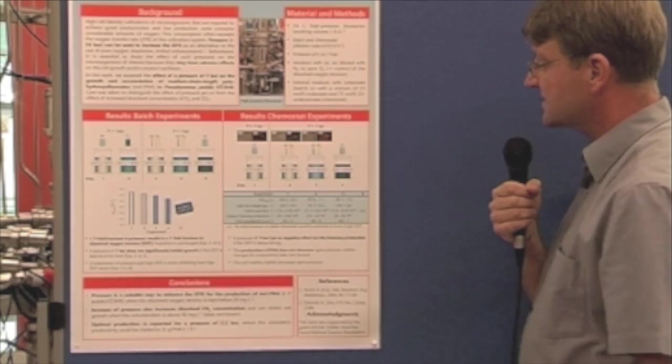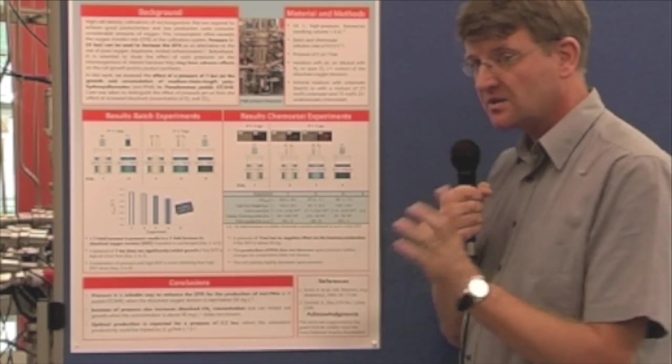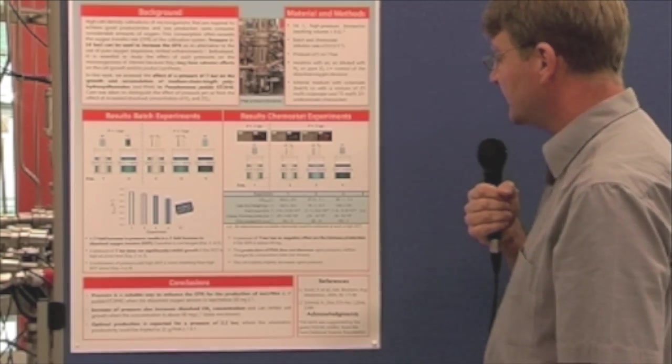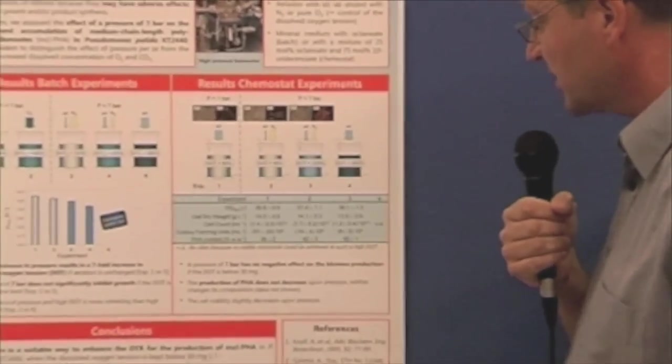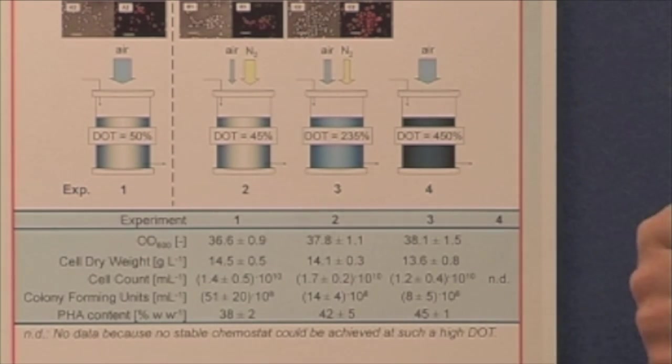When we look at chemostat experiments, we could observe that when we are in a certain range of dissolved oxygen tension, we can have the same productivities and even a little bit higher PHA production.